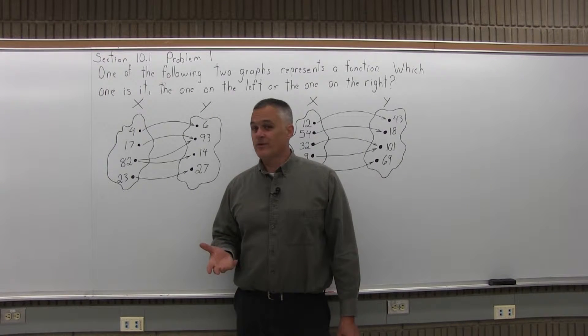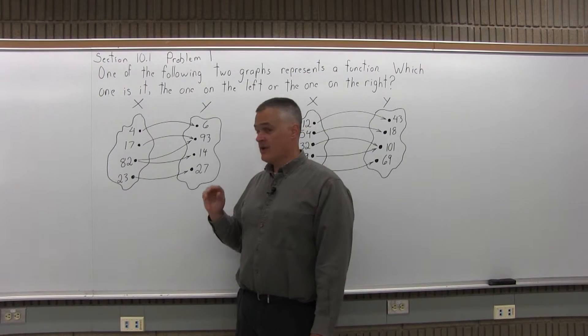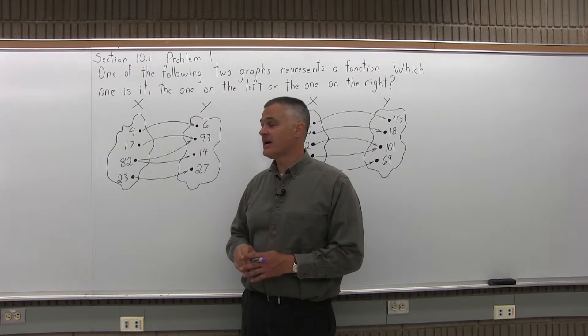Now remember there's only one rule for a function. Any input can have only one output. You can't give it an input that goes to two different outputs like the mother and daughter example in class that we talk about.